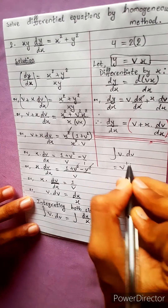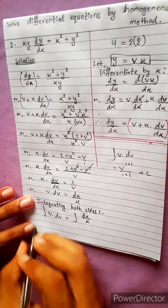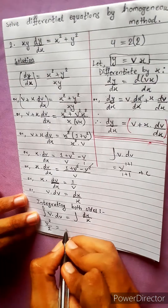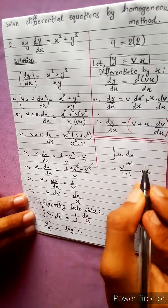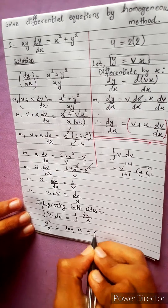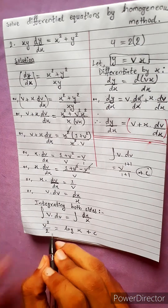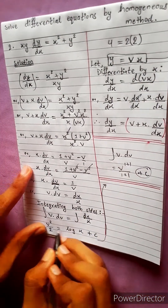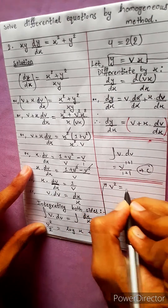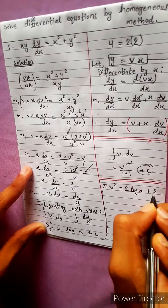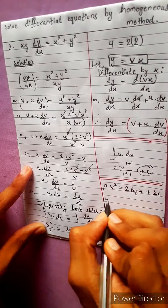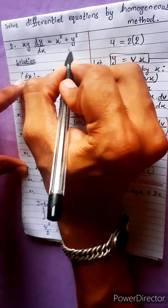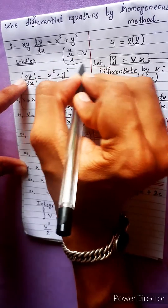Integrating both sides: v dv equals to dx by x. Integrating gives v square divided by 2 equals to log x plus c. Substituting back v equals to y by x: y squared equals to 2x squared log x plus c.